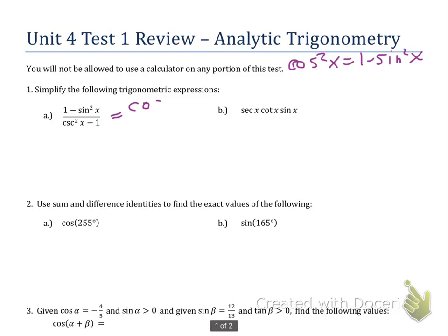The 1 minus sine squared x gets replaced with cosine squared x. The denominator seems to be most similar to the third identity, which is 1 plus cotangent squared equals cosecant squared.